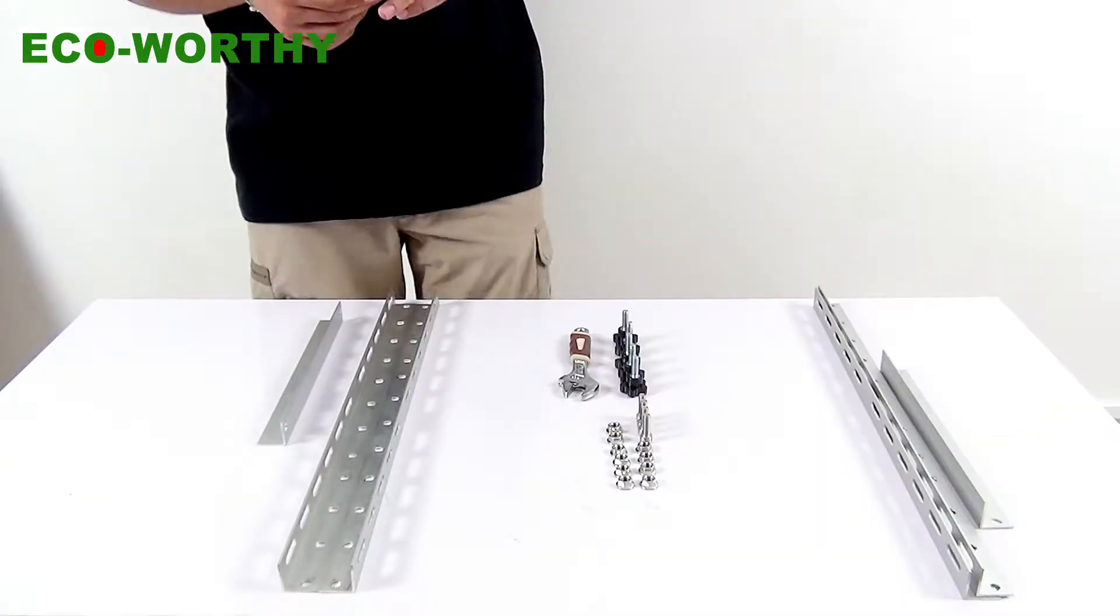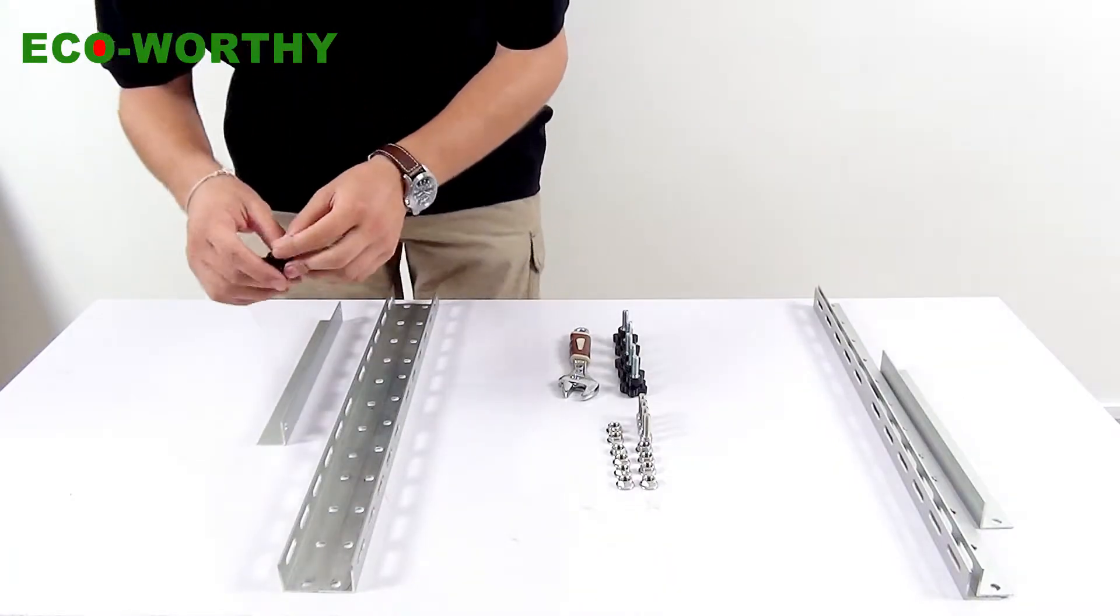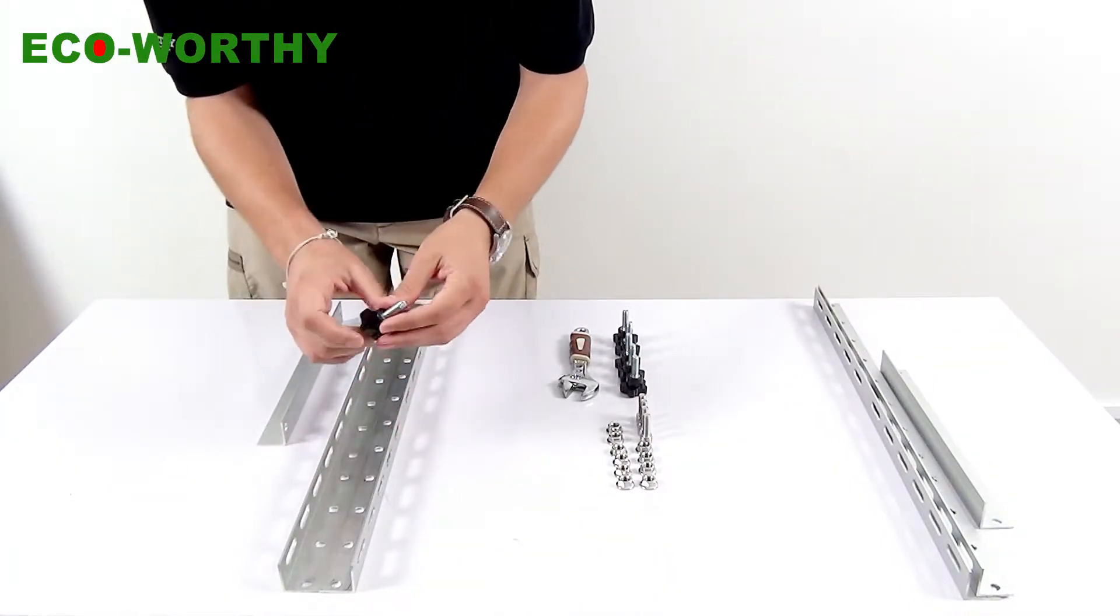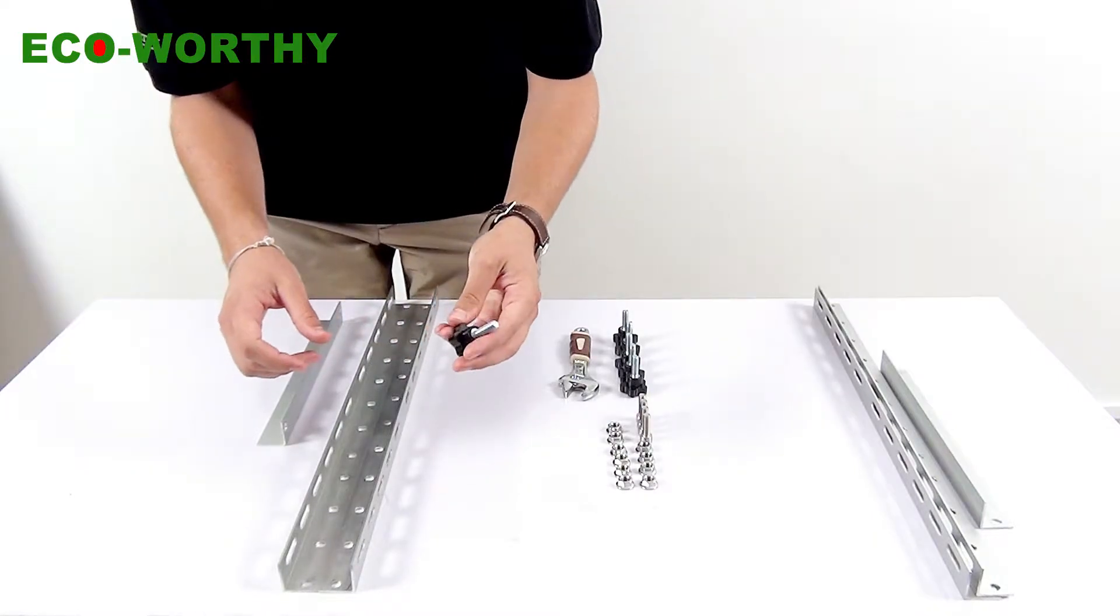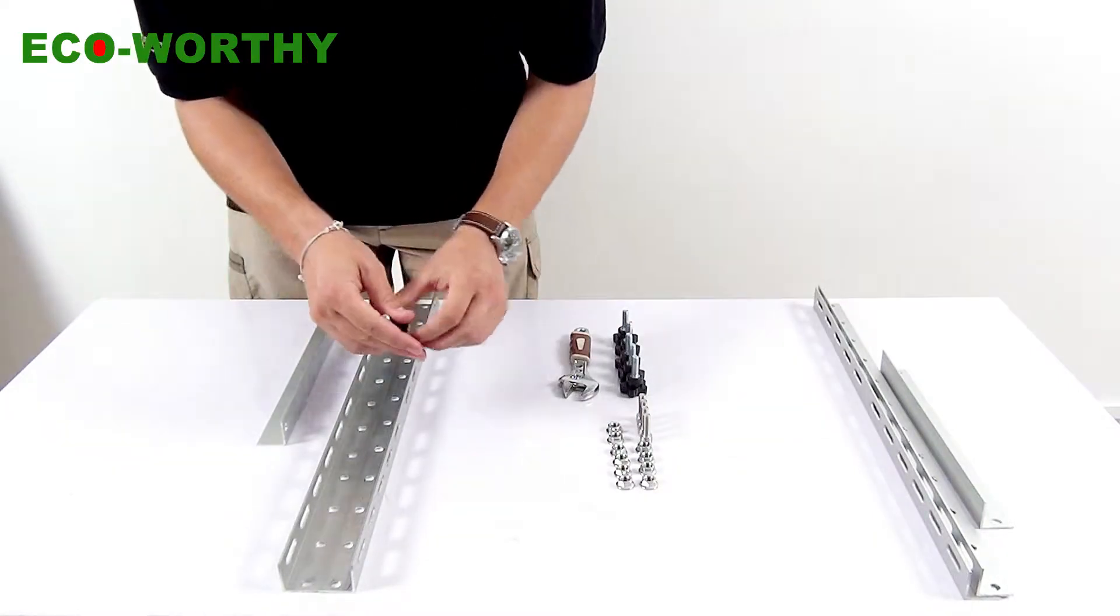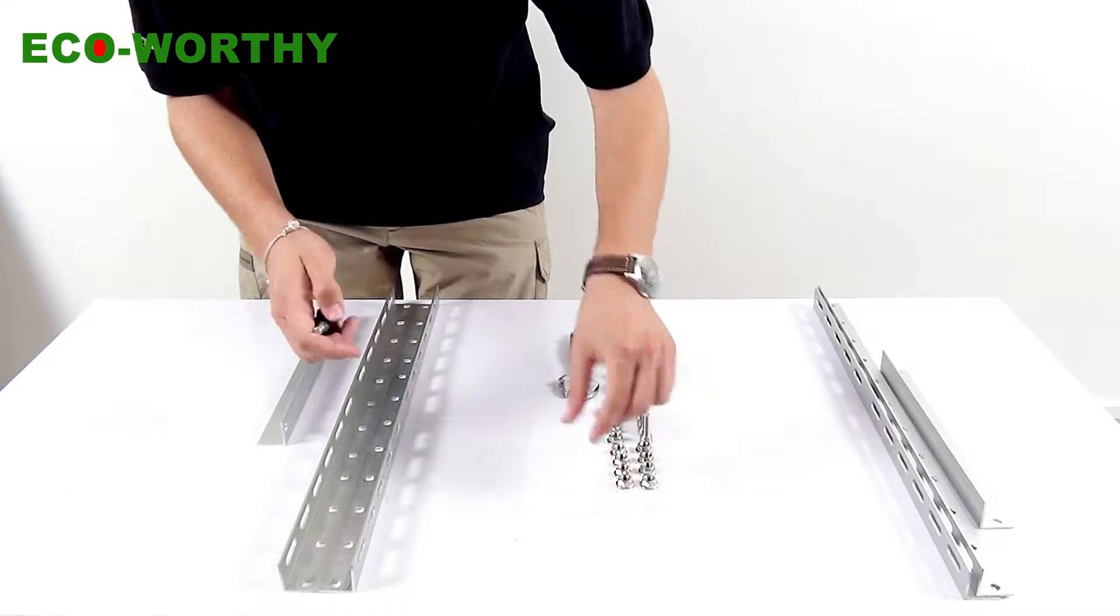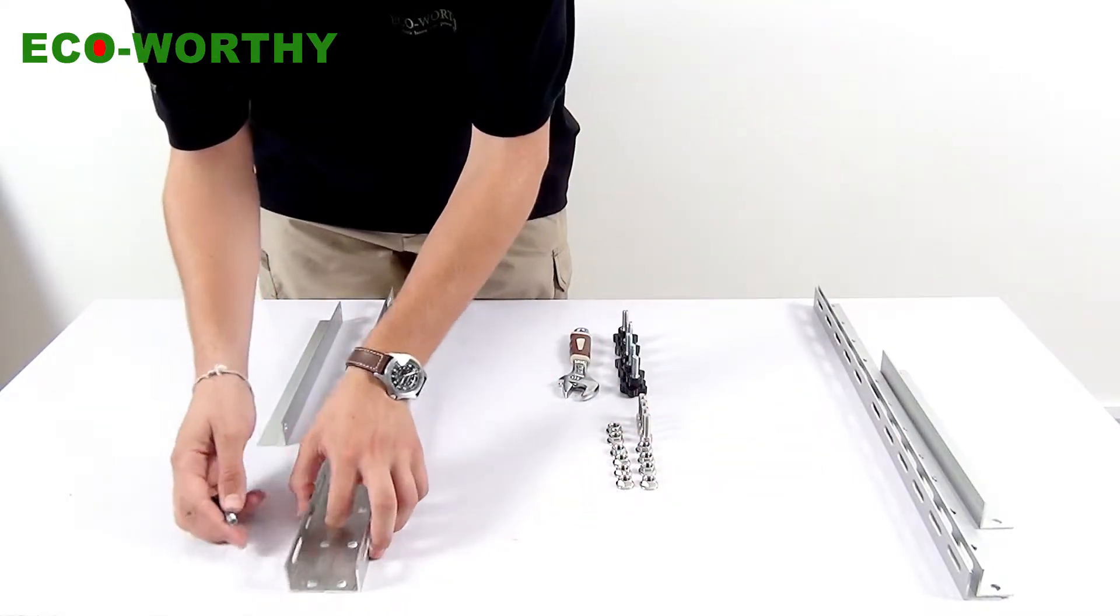We're going to show you how to set two long rails together. To do this job we need a wing bolt like this and a nut. Let's do it.